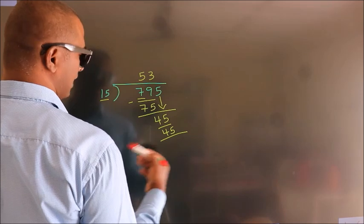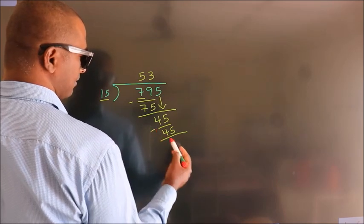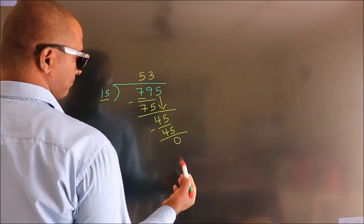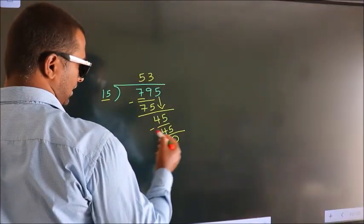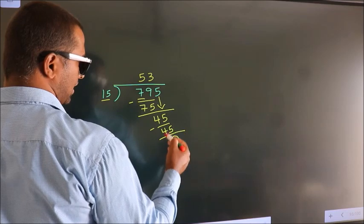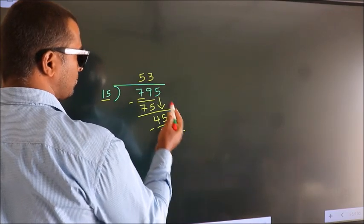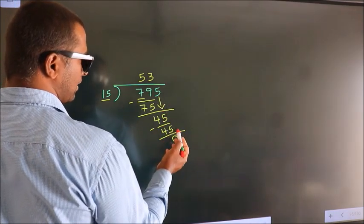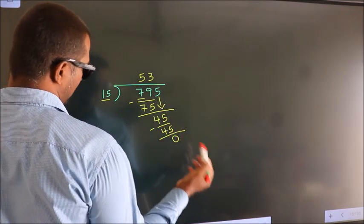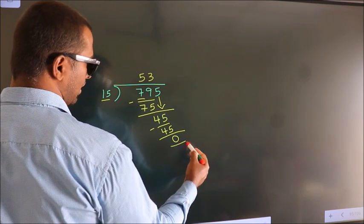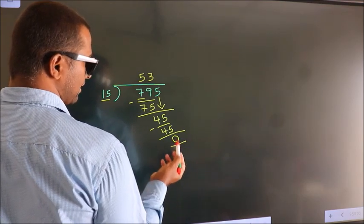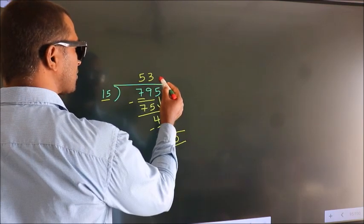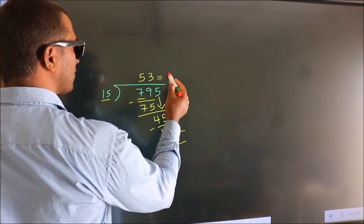Now we subtract. We get 0. After this, no more numbers to bring down. We got remainder 0. So this is our quotient.